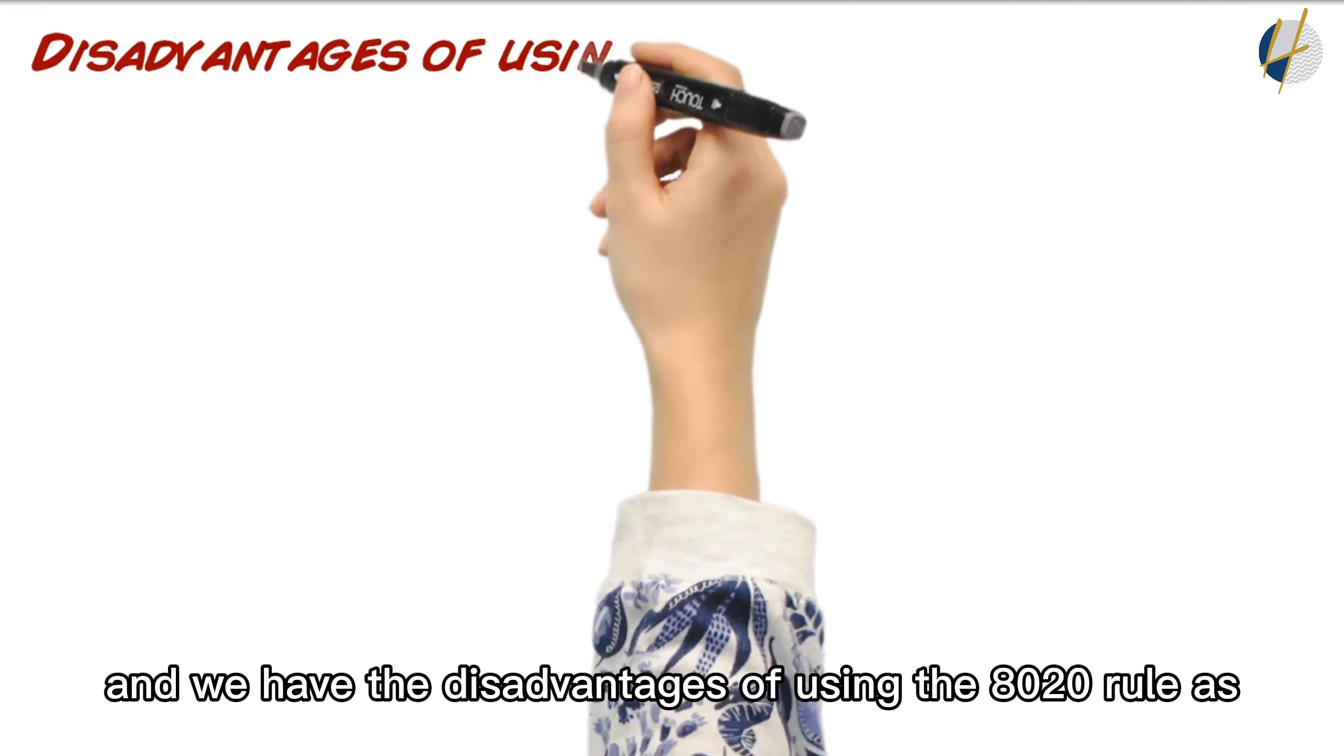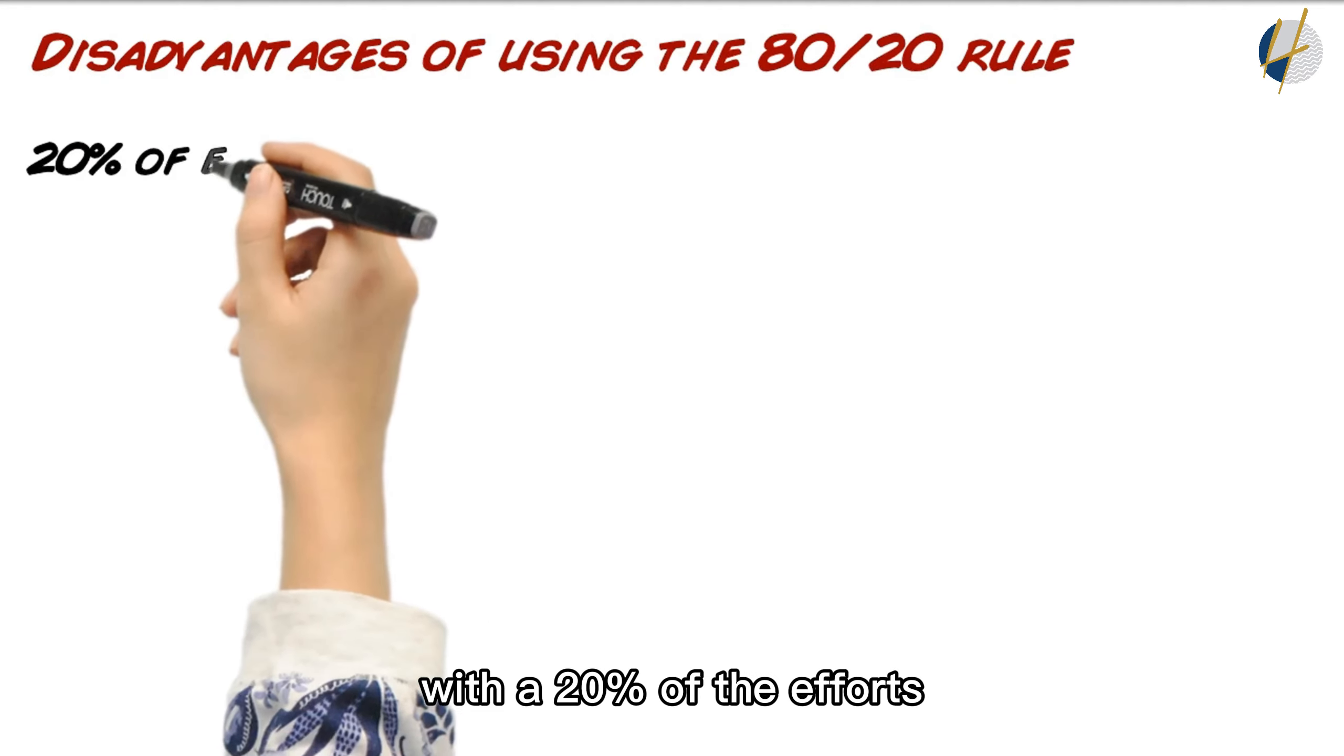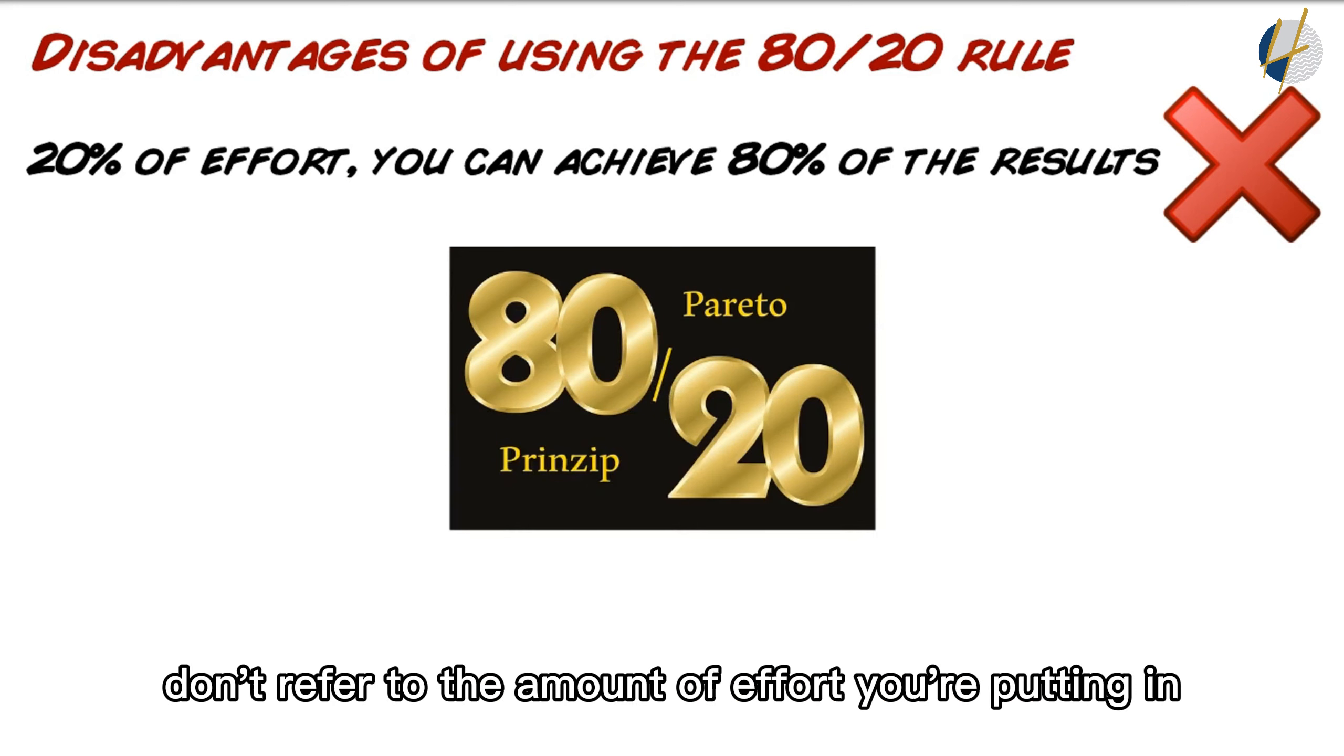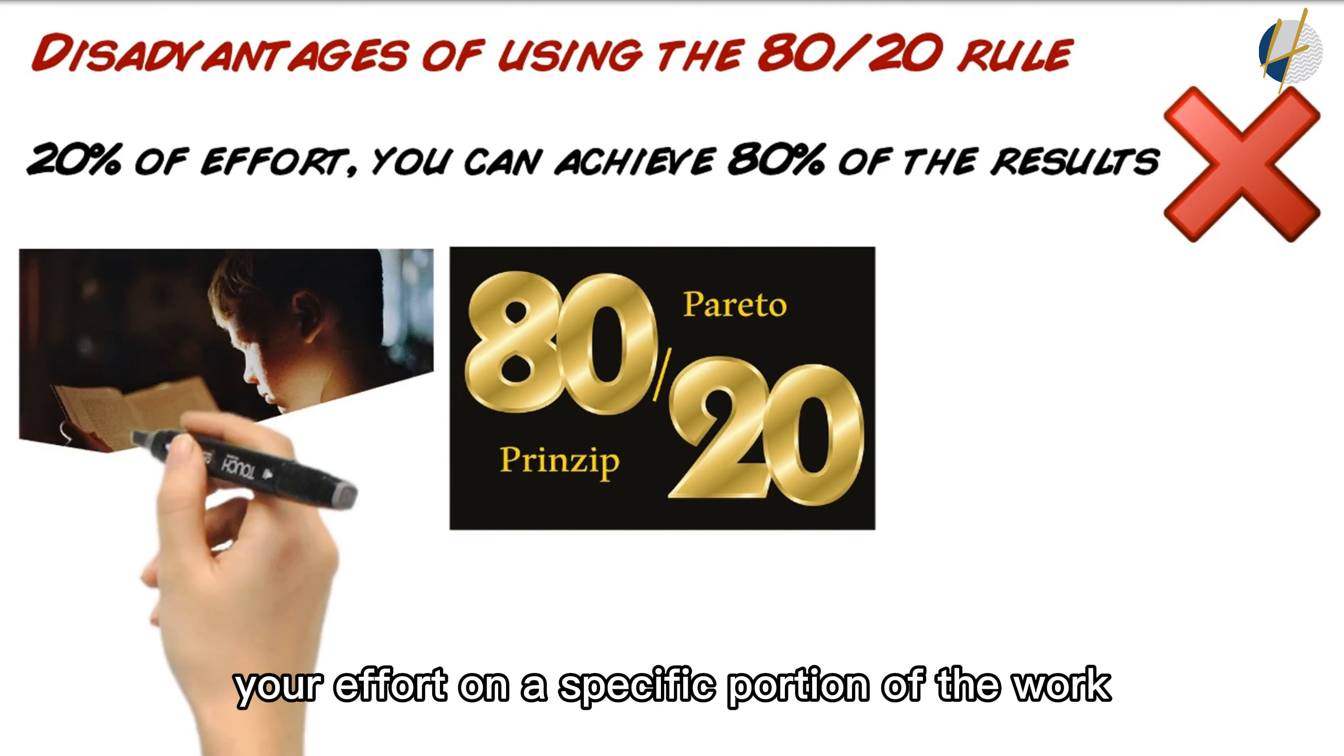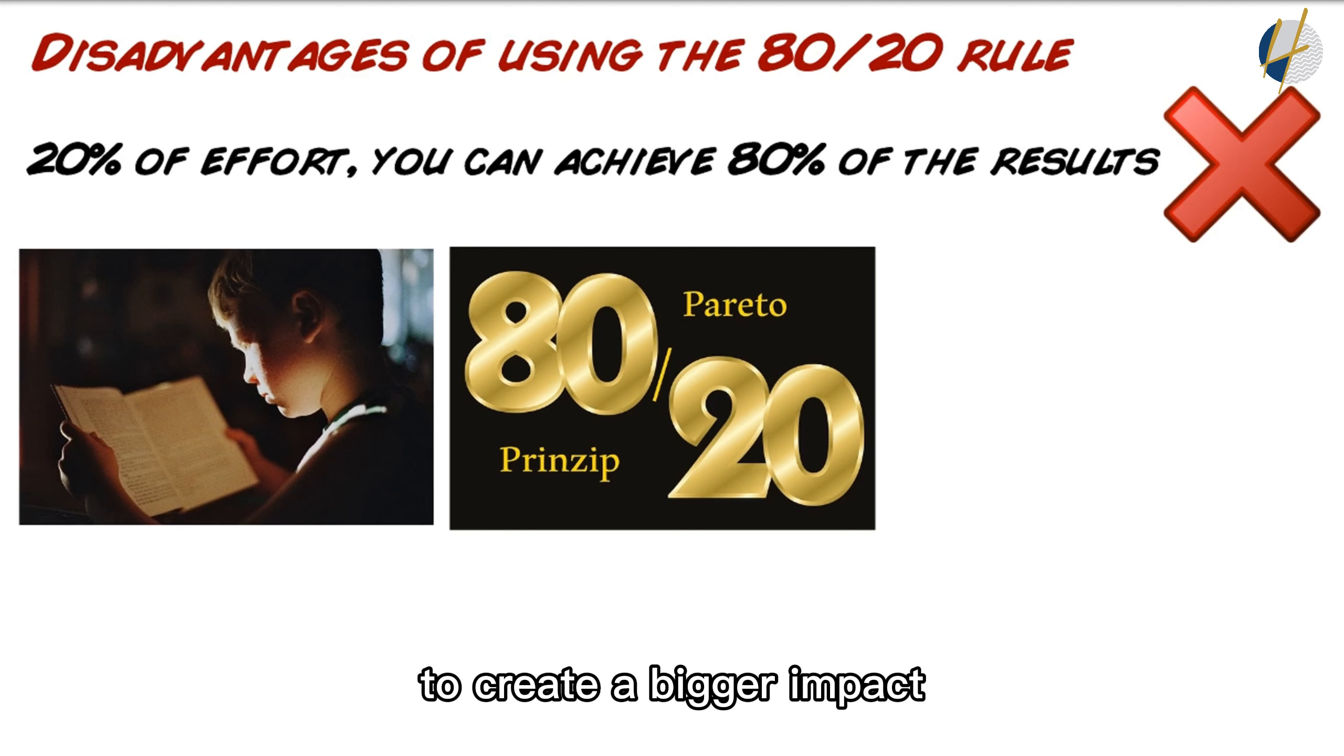And we have the disadvantages of using the 80-20 rule as well. There's a common misinterpretation of the Pareto Principle that with 20% of the effort, you can achieve 80% of the result. This is not necessarily the case. The 20 and 80, these numbers don't refer to the amount of effort you're putting in, but the causes and consequences you're working on. The goal is not to minimize the amount of effort, but to focus your effort on a specific portion of the work to create a bigger impact.